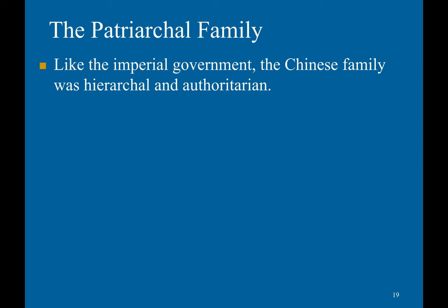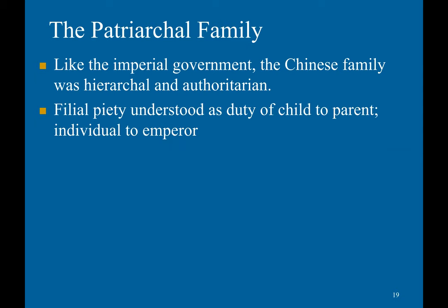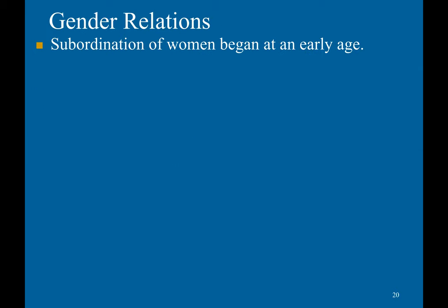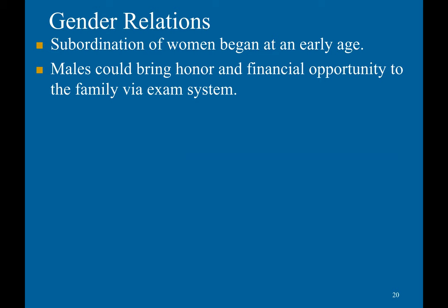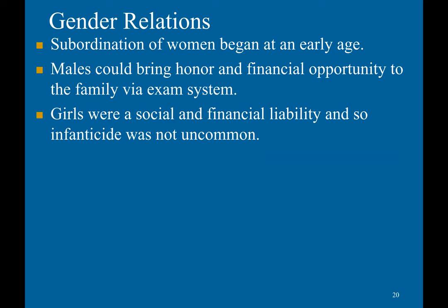Like the imperial government, the Chinese family was hierarchical and authoritarian. Filial piety was understood as the duty of the child to the parent, much like the individual to the emperor. The eldest son was favored. Subordination of women began at an early age — males could bring honor and financial opportunity to the family via the exam system. Girls were a social and financial liability, and infanticide was not uncommon. This tradition would continue into modern China, resulting in a very skewed sex ratio towards males.